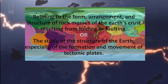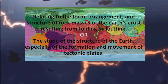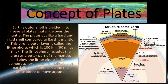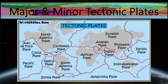Especially the formation and movement of tectonic plates. Earth's outer shell is divided into several plates that glide over the mantle. The plates act like a hard and rigid shell compared to Earth's mantle. This strong outer layer is called the lithosphere, which is 100 kilometers thick. The lithosphere includes the crust and outer part of the mantle. Below the lithosphere is the asthenosphere, which is malleable or partially malleable, allowing the lithosphere to move around.